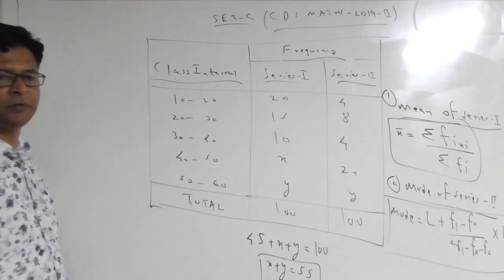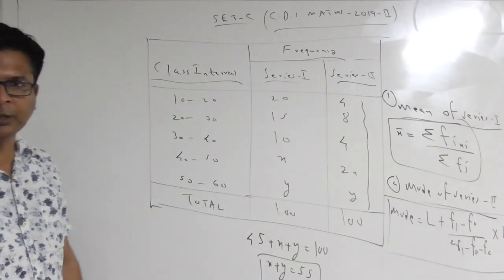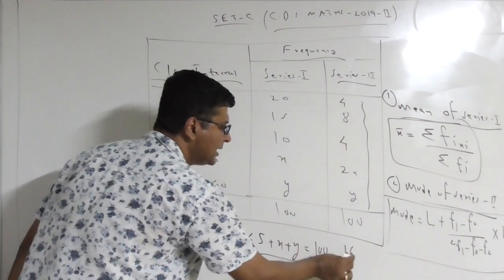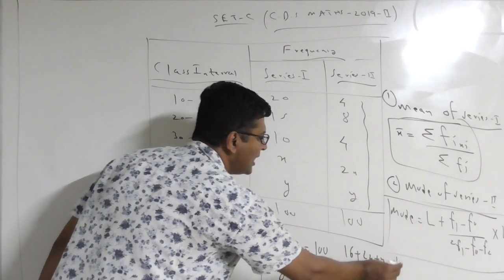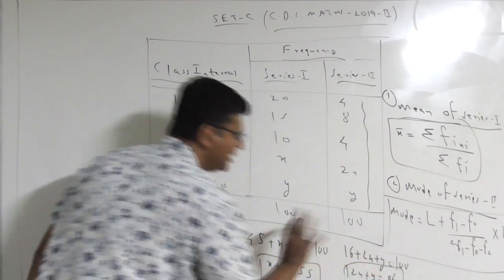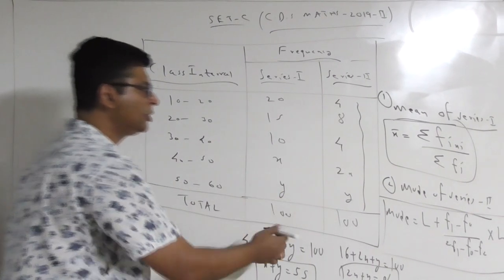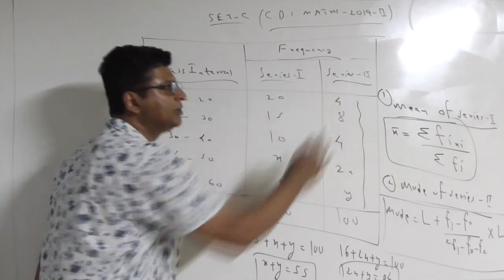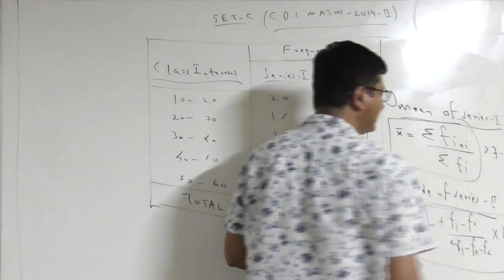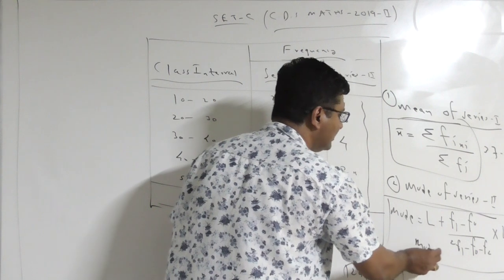Similarly, adding all values in series 2 gives a second equation: 2X + Y = 80. Solving these two equations gives the values of X and Y. Once you have X and Y, you can solve for mean and mode. After calculation, the mean comes out to be 37.6, which is option C, and the mode comes out to be 46.